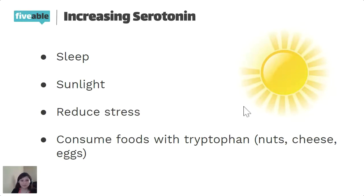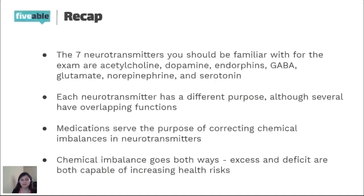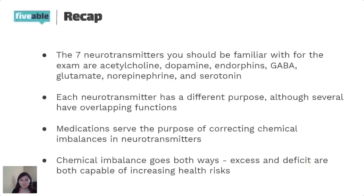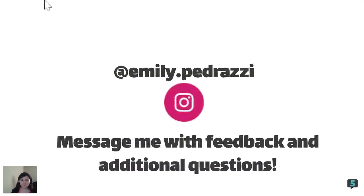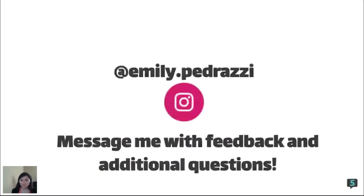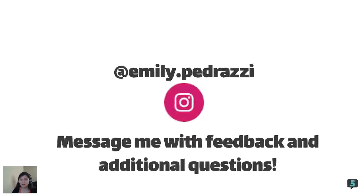Just a brief recap: the seven neurotransmitters you should be familiar with for the AP exam are ACH, dopamine, endorphins, GABA, glutamate, norepinephrine, and serotonin. They all have different purposes, although some have overlapping functions. Medications serve to correct chemical imbalances from a psychiatric perspective, and a chemical imbalance goes both ways — excess and deficit are both capable of increasing health risks. If you have any additional questions, message me on Instagram at emily.pedrazi. See you in the next one!